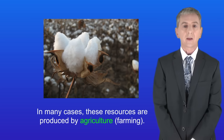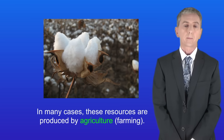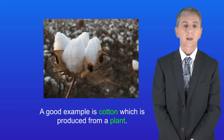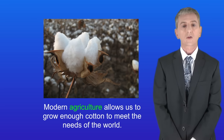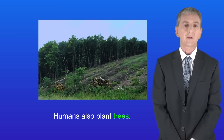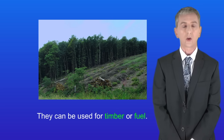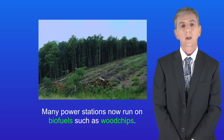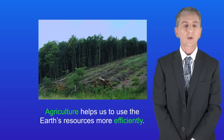In many cases these resources are produced by agriculture, in other words farming. A good example is cotton which is produced from a plant. Modern agriculture allows us to grow enough cotton to meet the needs of the world. Humans also plant trees and then they can be used for timber or fuel. For example, many power stations now run on biofuel such as wood chips. So again agriculture helps us to use the Earth's resources more efficiently.